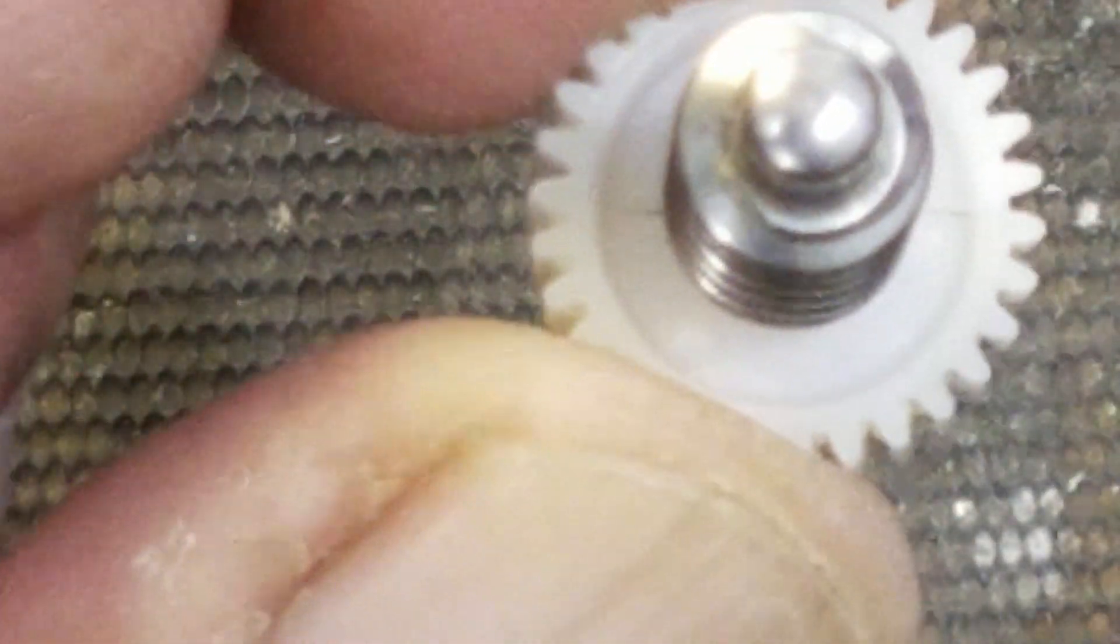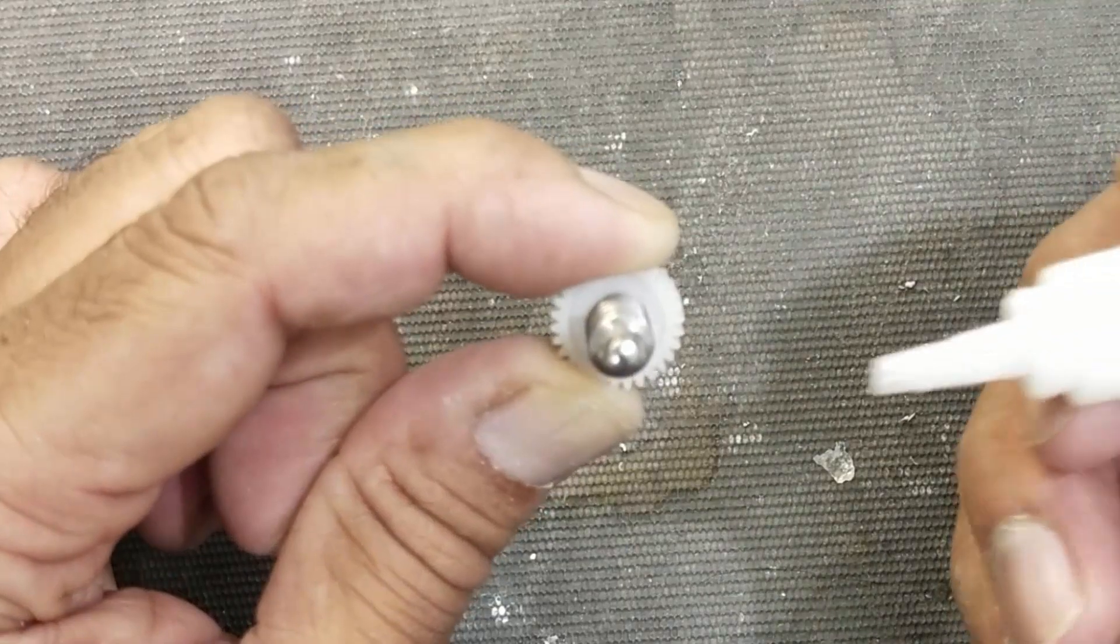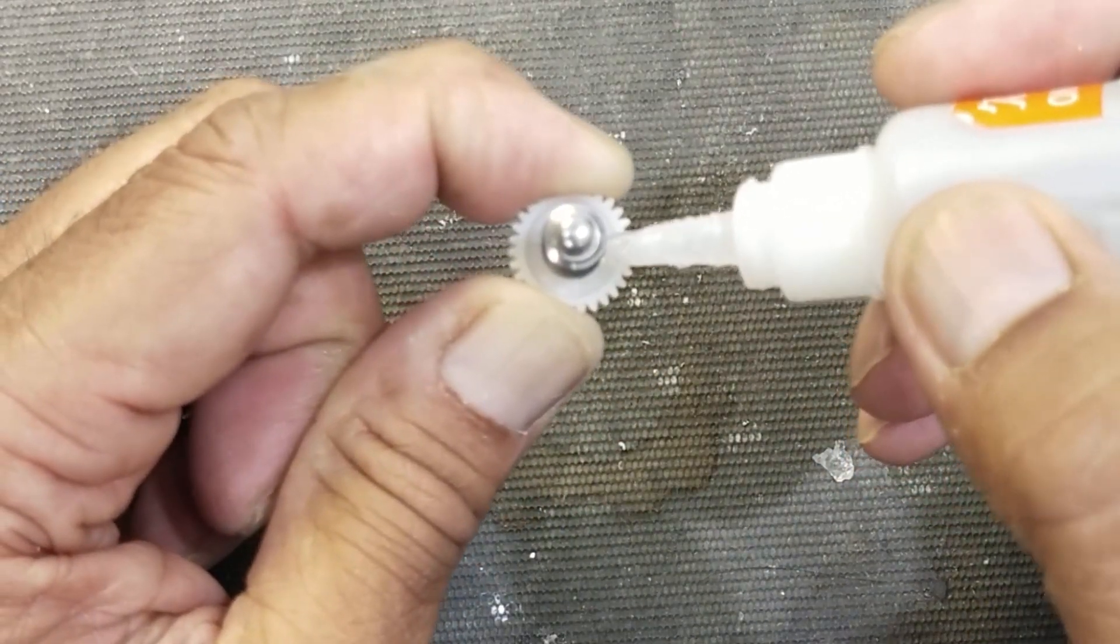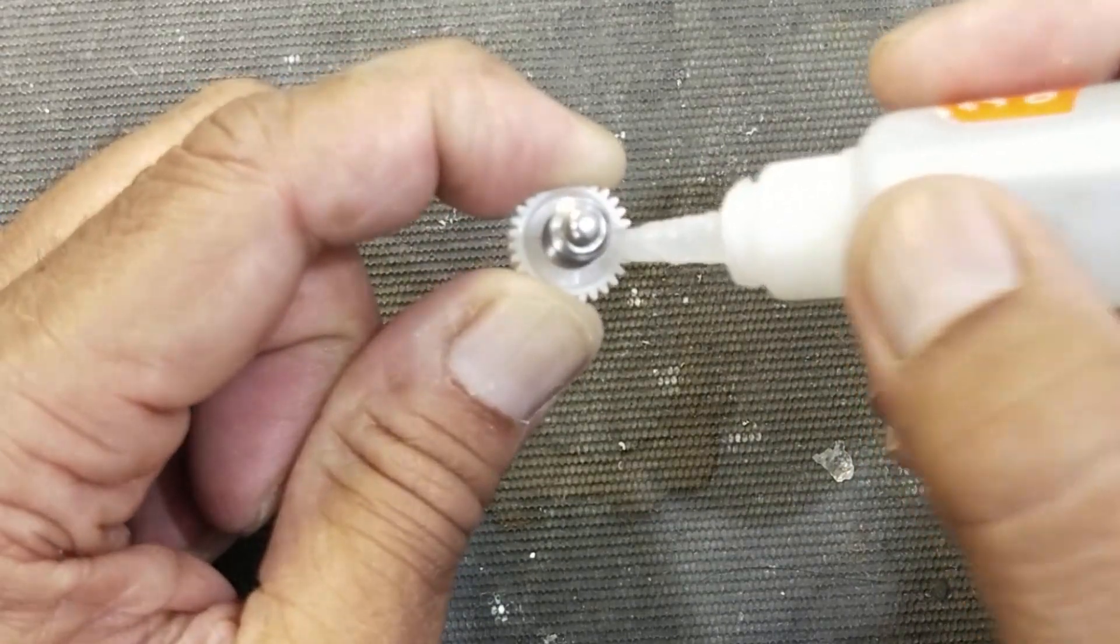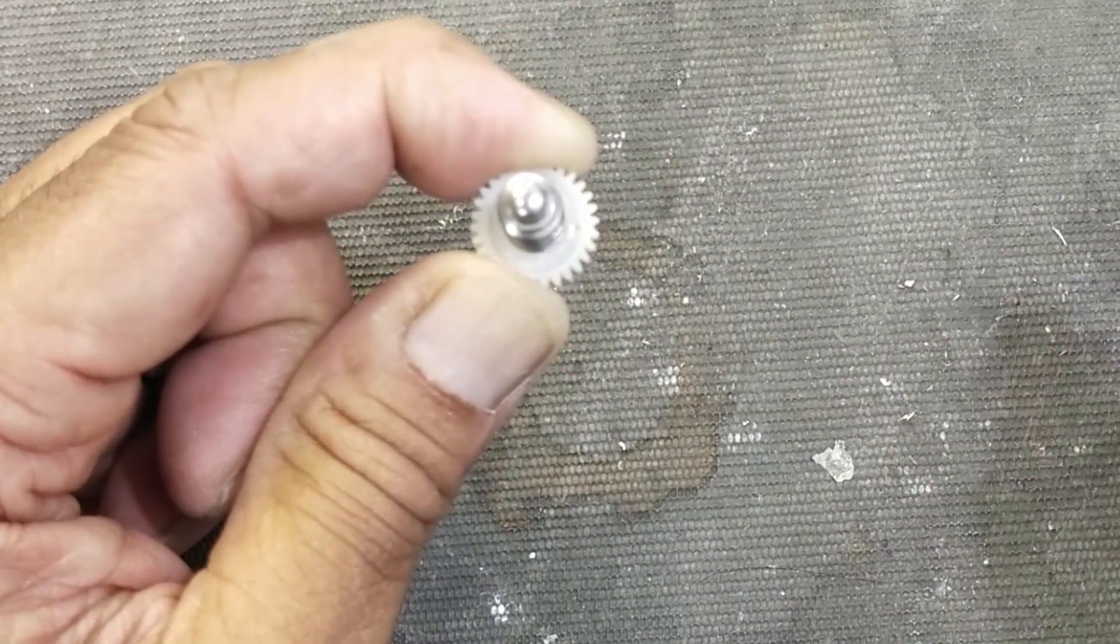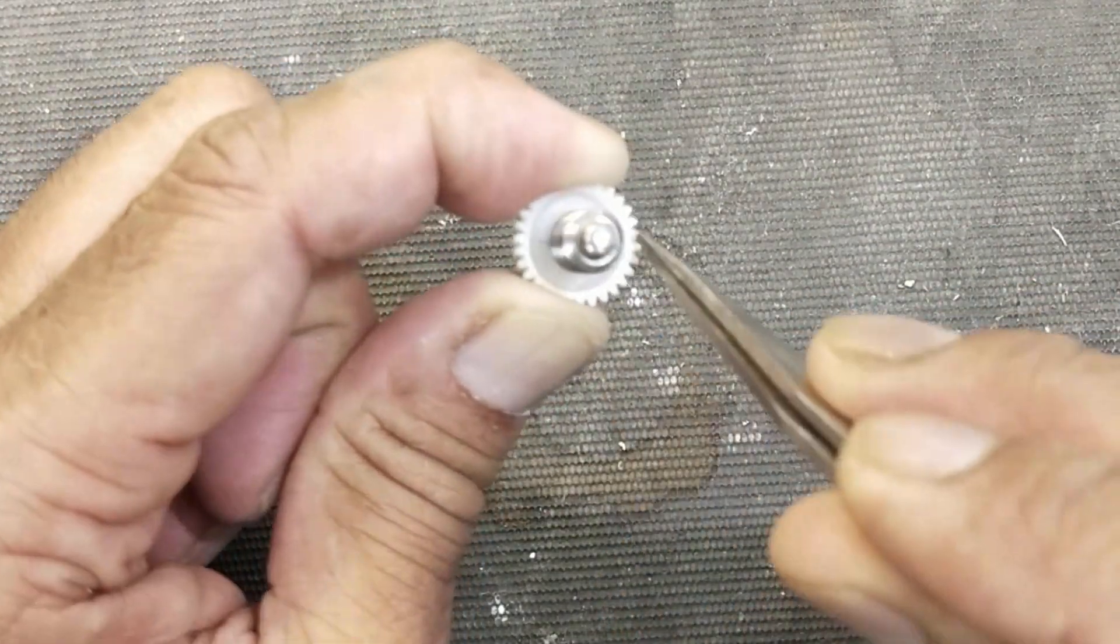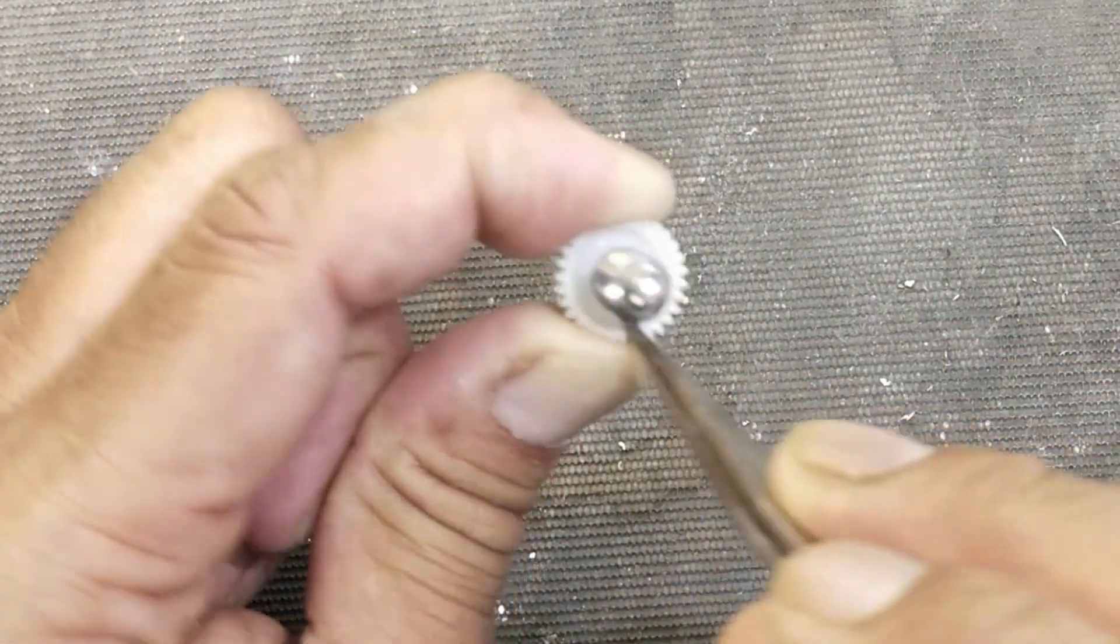When it is aligned properly, now I will use a very small drop of super glue. We will not allow it to enter the gear teeth. We will just put it here so that it will make a joint.